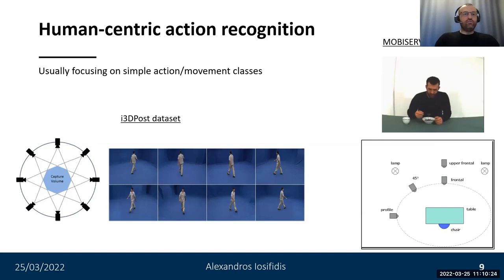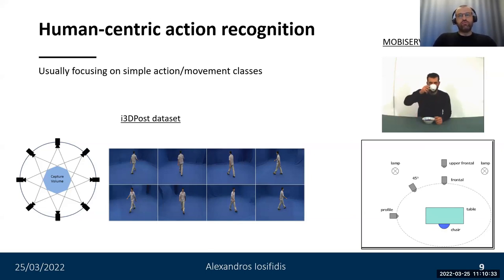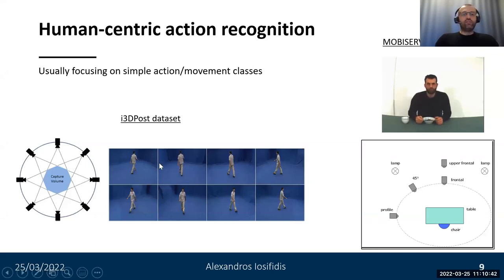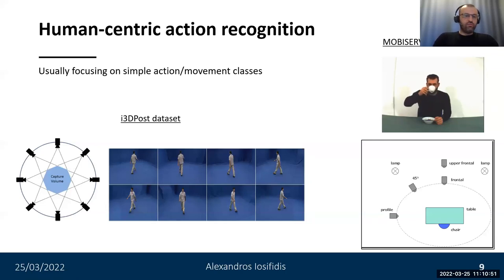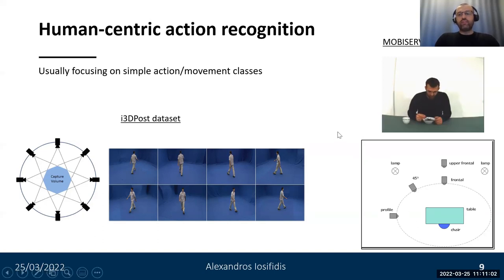Someone can use multiple cameras to create a multi-camera setup, and the enriched visual information can be used to improve the performance and robustness of action recognition methods. The volume seen by all cameras is called the camera setup capture volume, shown here in blue, and it is the place in the room which can be seen by all cameras at the same time.